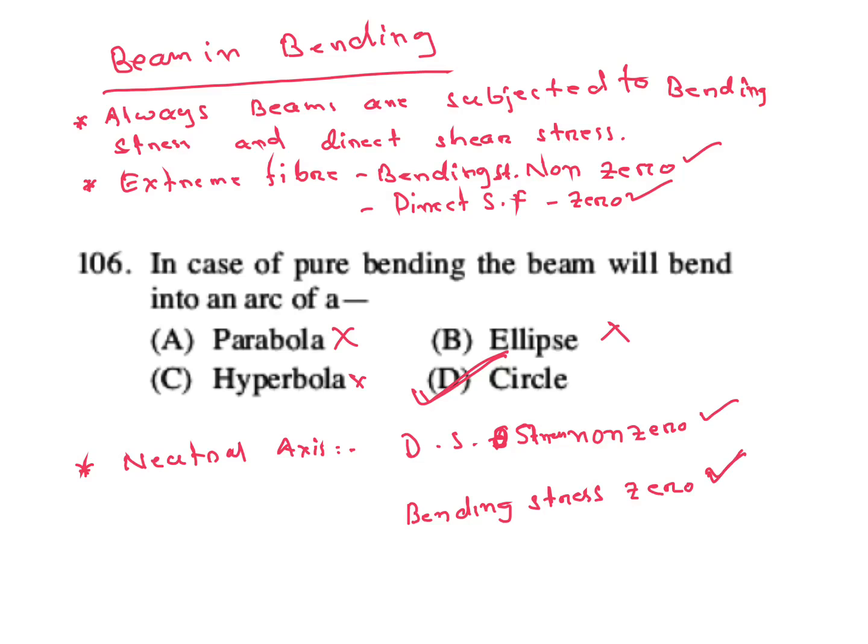In case of shaft in torsion, shear stress is maximum at the outer fibers and zero at the axis of rotation.